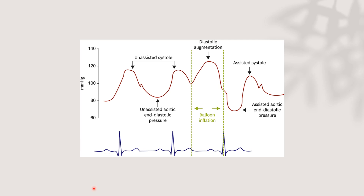This is an IABP augmentation picture showing inflation and deflation. The first waveform is a normal arterial wave showing systole, the systolic upstroke, and the dicrotic notch representing aortic valve closure. The first upstroke represents unassisted systole and the second area represents unassisted aortic end-diastolic pressure. In the next cycle, parallel to the dicrotic notch, balloon inflation occurs, producing diastolic augmentation.